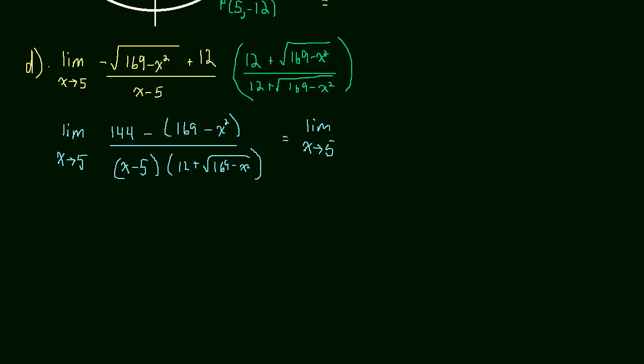So let me rewrite that as x squared minus 25. So the numerator simplifies to x squared minus 25. And the denominator will just leave the same, x minus 5 times 12 plus the square root of 169 minus x squared.